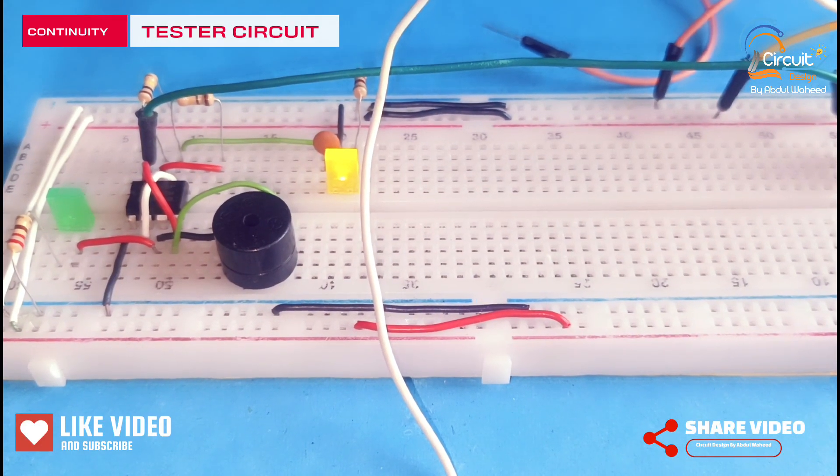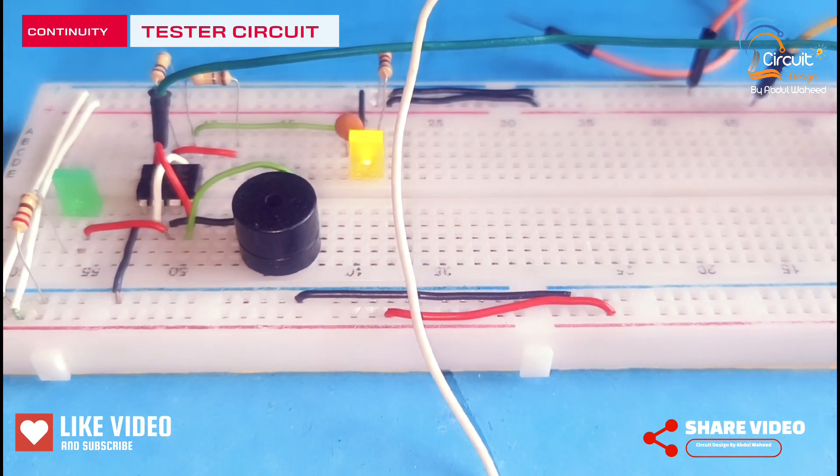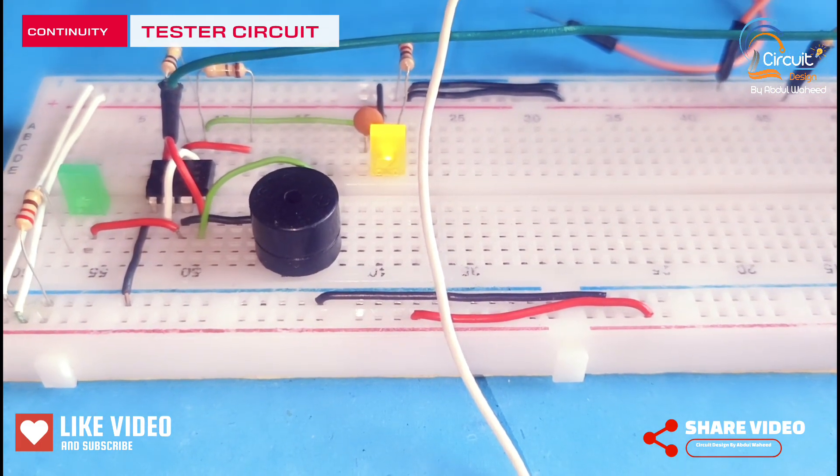You can see. Yellow LED is on. It means that circuit is in working state.